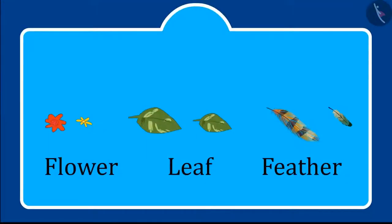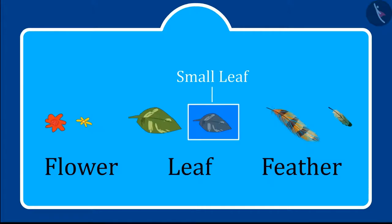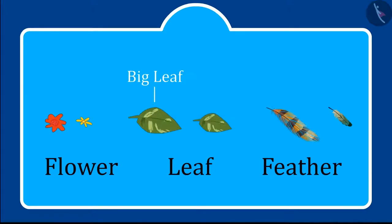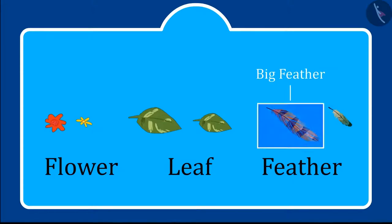Children, you saw how Chotu recognized big and small things. This is a small flower and this is a big flower. This is a small leaf and this is a big leaf. This is a small feather and this is a big feather.